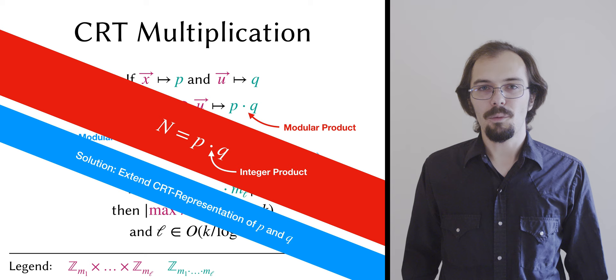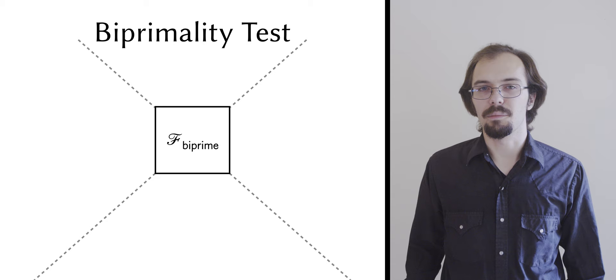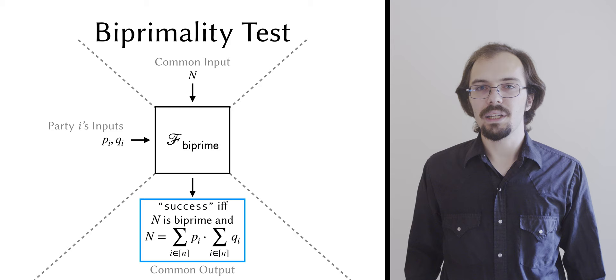I'm only going to talk briefly about the biprimality test, since our protocol follows mostly from prior work. The interesting thing is that we prove it realizes a standalone functionality. Here I have a simplified version of it. It takes the candidate biprime n as a common input and integer shares of the candidate factors p and q from each party, and it outputs success only if both n is a biprime and n is really the product of the input factors.